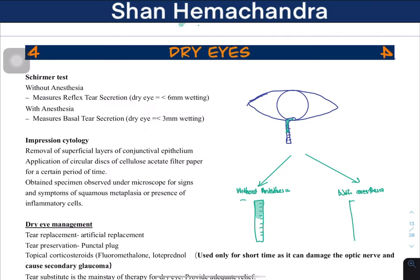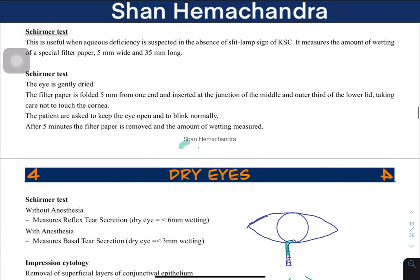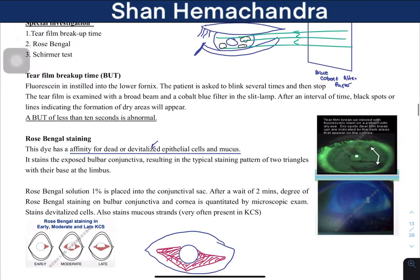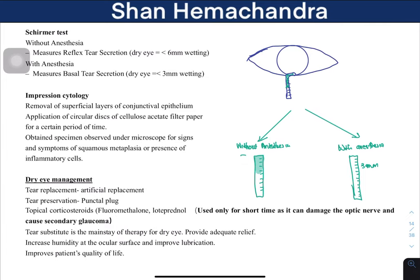The Schirmer's test with anesthesia checks basal tear secretion and is used when the tear breakup time test is not available. Additionally, impression cytology involves taking off a layer of the conjunctival epithelium, applying cellulose acetate filter paper, and observing the specimen for signs of squamous metaplasia or inflammatory cells on the conjunctiva.